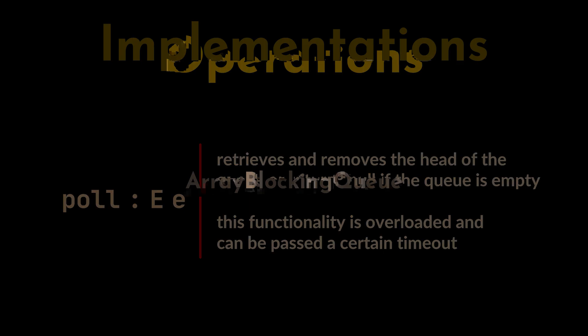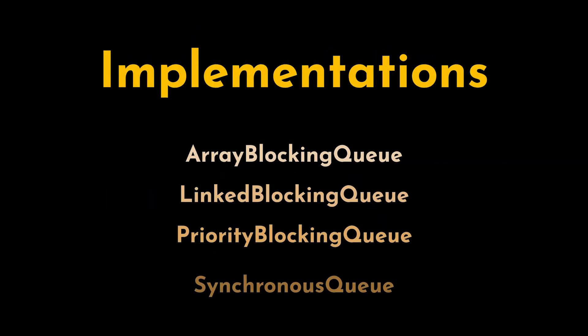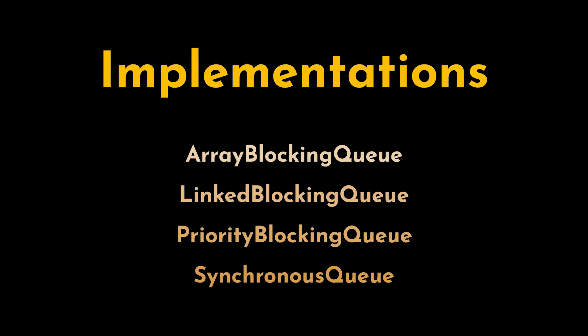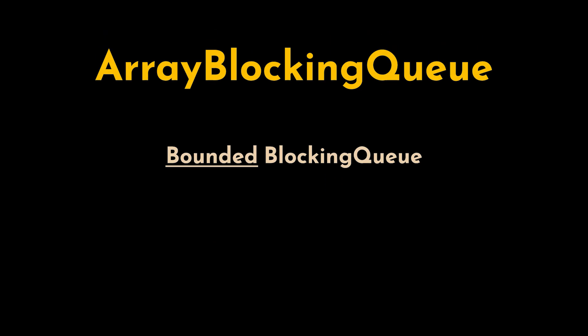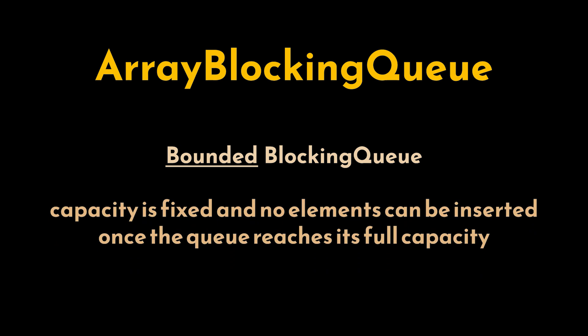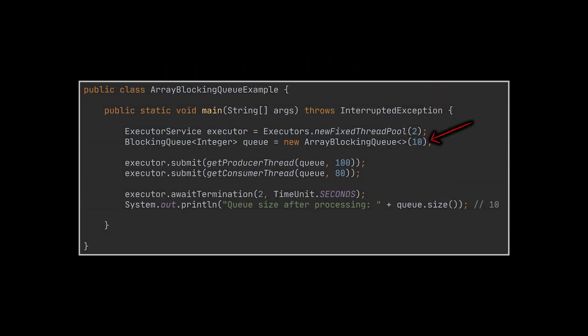The BlockingQueue interface has several implementations, each offering different performance characteristics and usage patterns. The first one is the ArrayBlockingQueue — it is a bounded blocking queue backed by an array. Once initialized, its capacity is fixed and no elements can be inserted once the queue reaches its full capacity. In this example, we created an ArrayBlockingQueue with a capacity of 10.